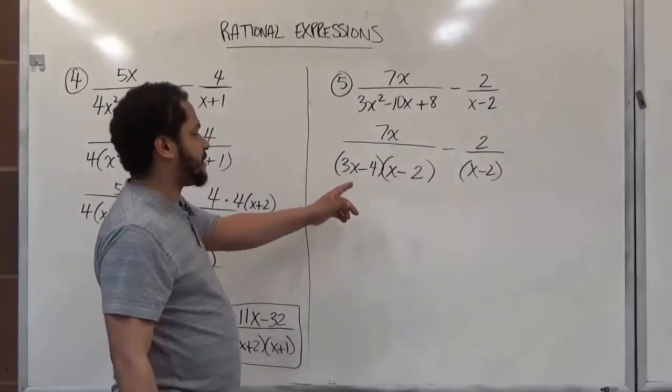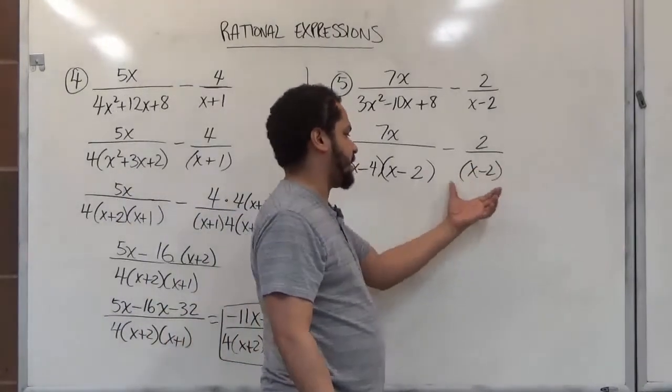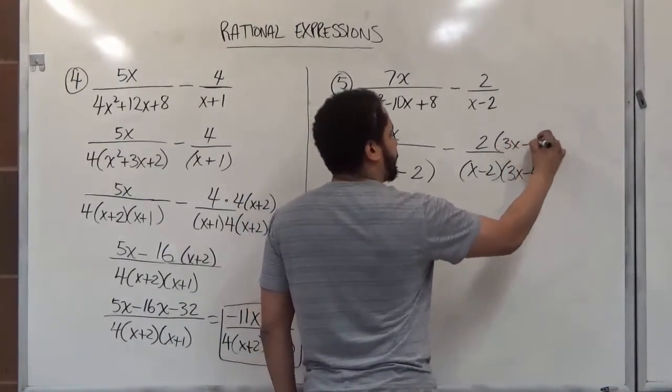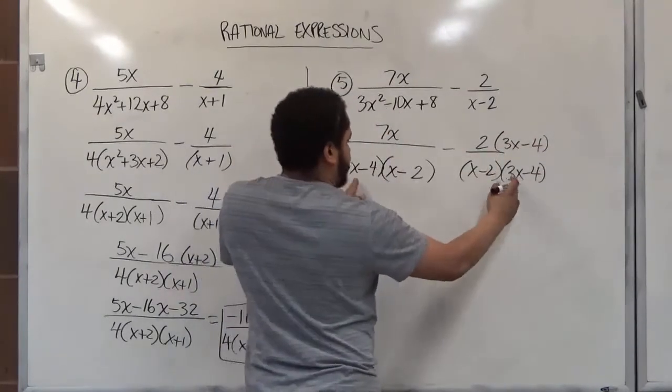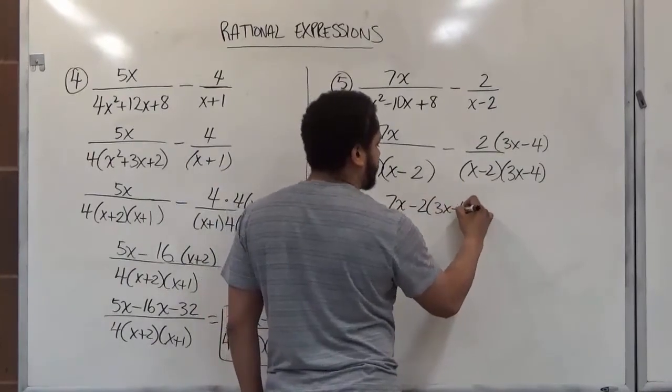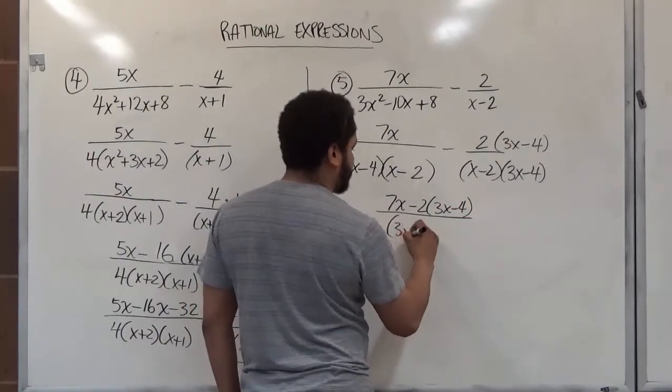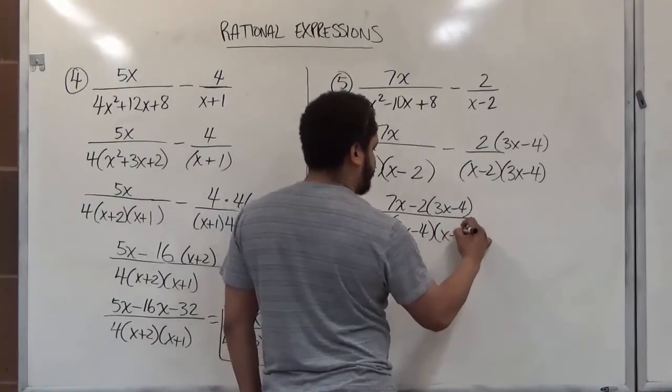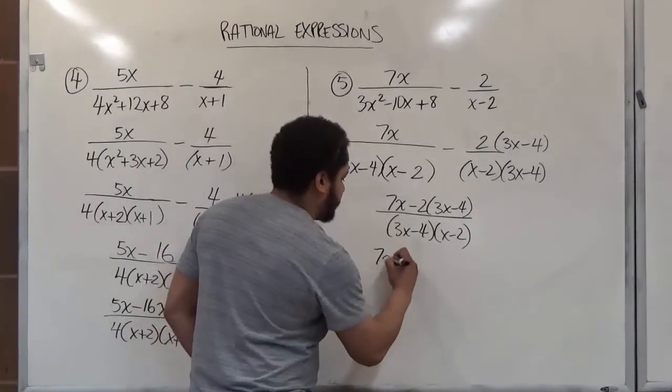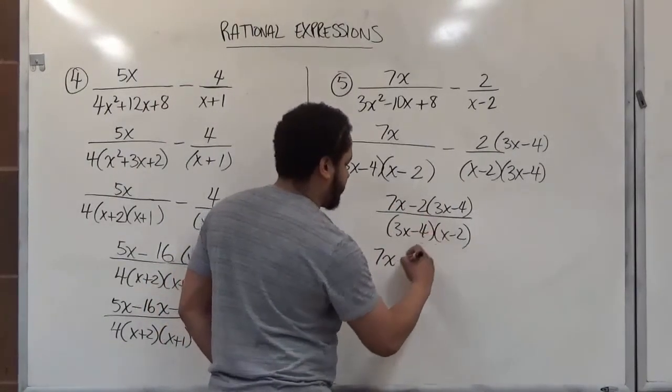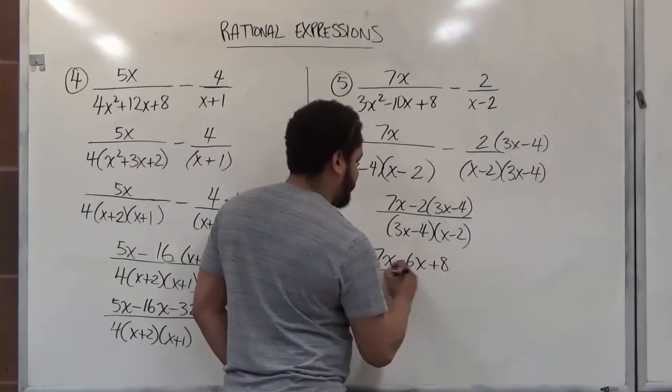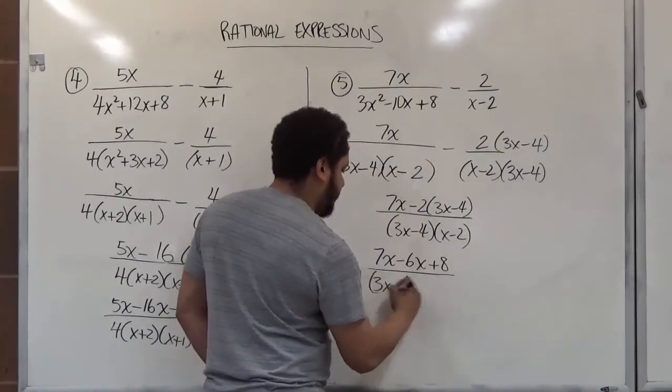Now to complete the LCD, we need 3x minus 4 on the top and bottom over here. So we're going to put the 3x take away 4 here, and combine the numerators while the denominators become one in unison. So we have 7x minus 2 times 3x take away 4. On the bottom we have just one single denominator, which is the common for both of them. Now we're going to distribute this 2. We're going to leave the 7x alone because it's a leading term. Negative 2 times 3x gives us negative 6x. Negative 2 by negative 4 gives us positive 8. The denominator here again is 3x minus 4 and x minus 2.